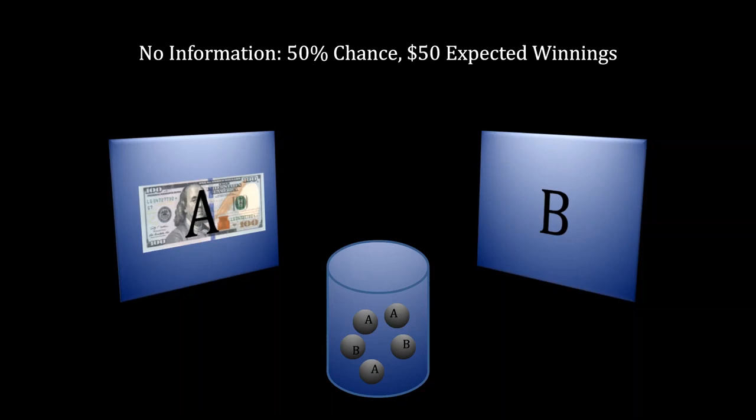Let's start with the easier question. To make the explanation a little bit simpler, and without loss of generality, imagine that I had put the $100 bill into envelope A. So we have three A balls in the canister and two B balls. In order to think about how much you should be willing to pay to look at one of those balls, you need to think about what your alternative is. If you take no new information, then you have a 50% chance of selecting the correct envelope, and therefore a $50 expected winnings. You'll win $100 50% of the time, and $0 the remaining 50% of the time.